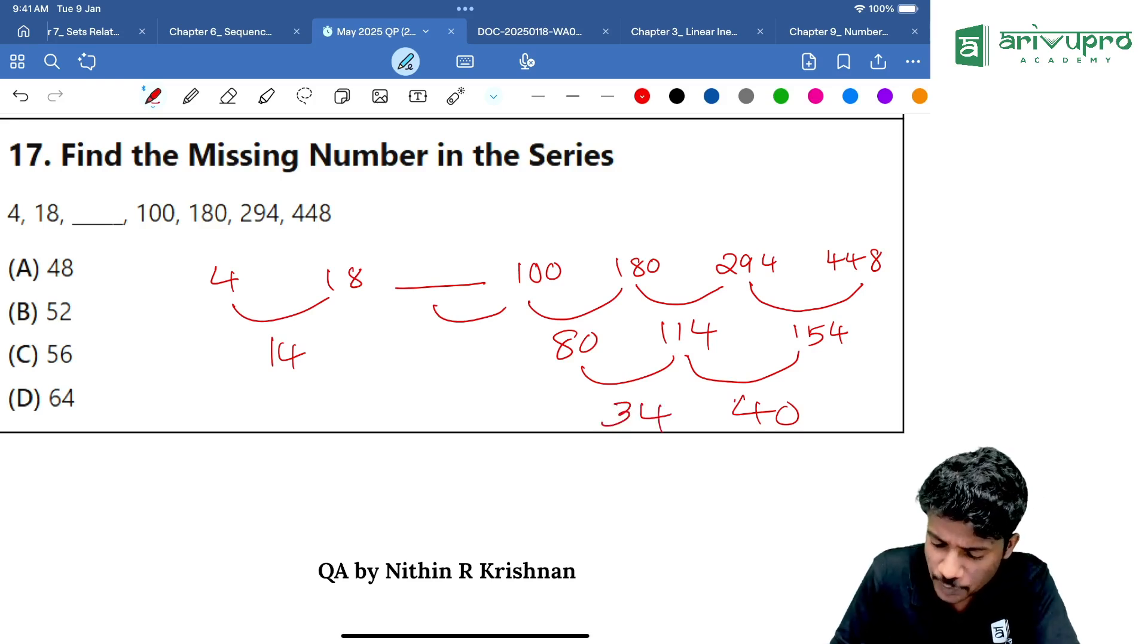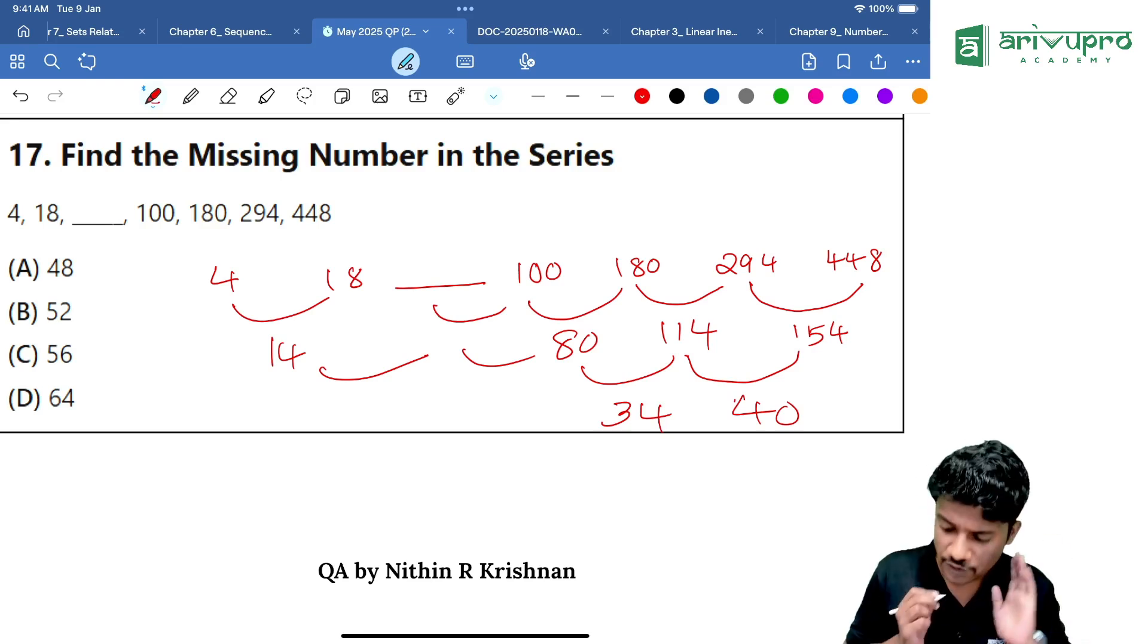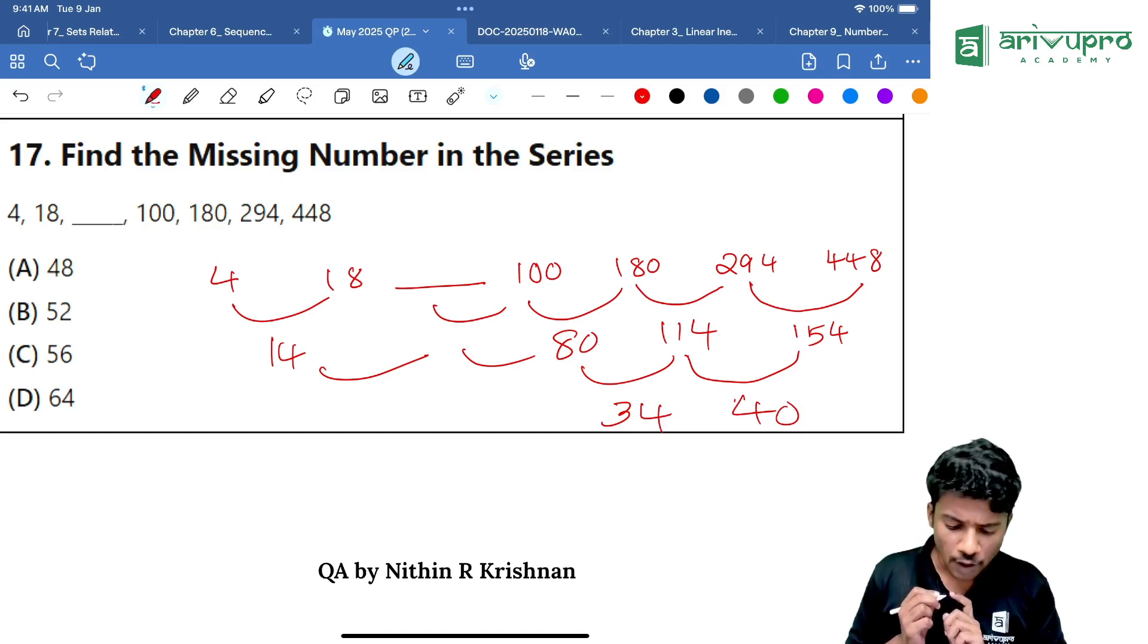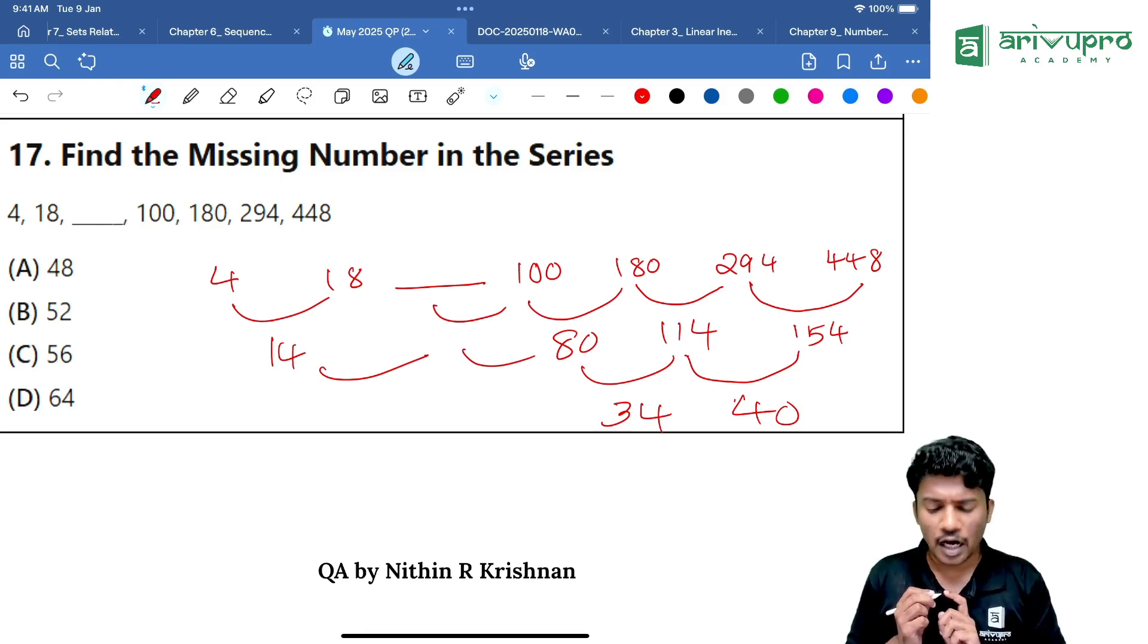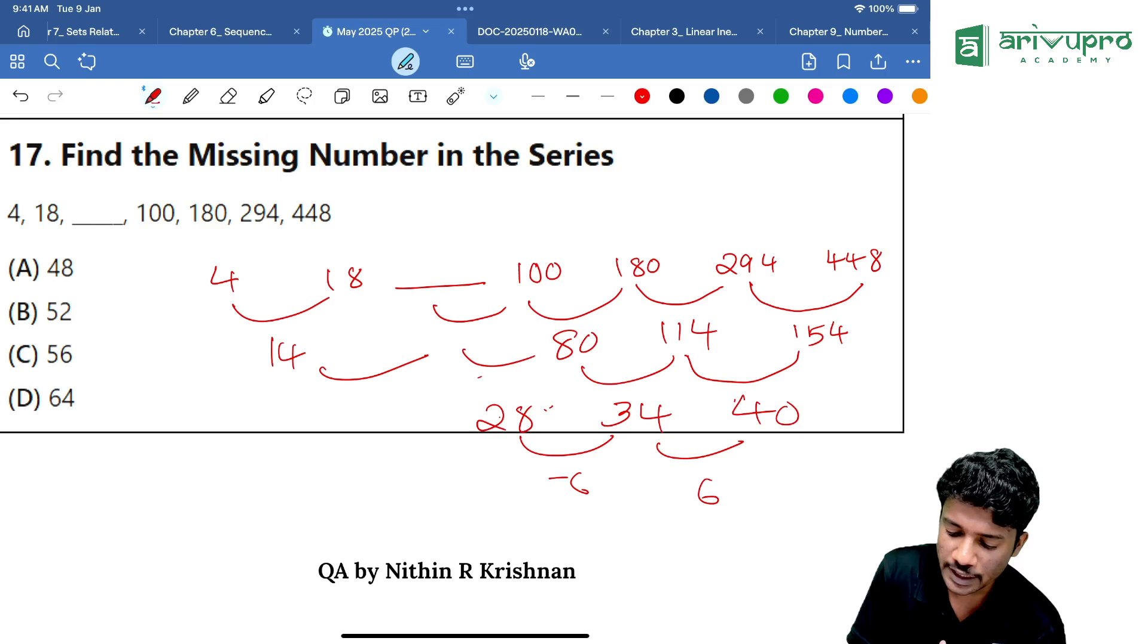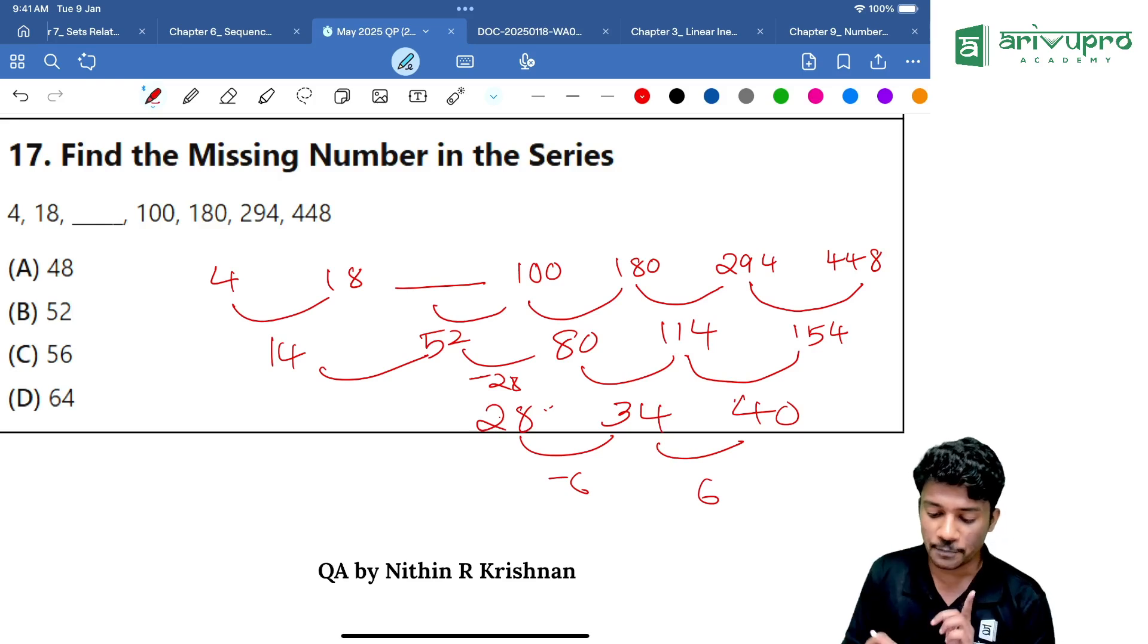Some number should be over here. We don't know that number and that number should also be having a pattern with the previous number. We will option hit. 28. Because the pattern is 6. Next number in the second line should be minus 6, that means it will become 28. Then 80 minus 28 is 52. So 52 should be over here.